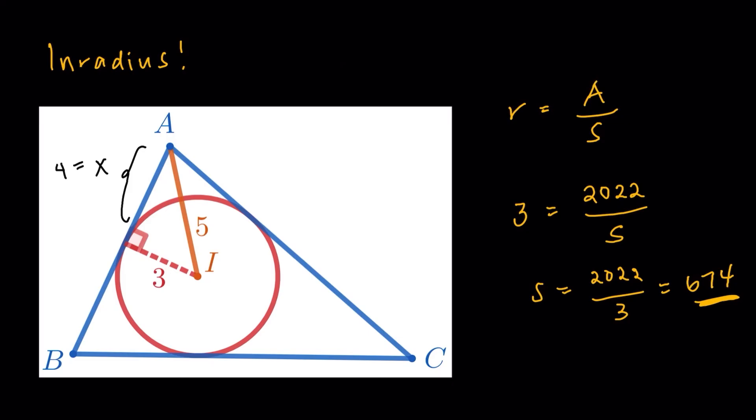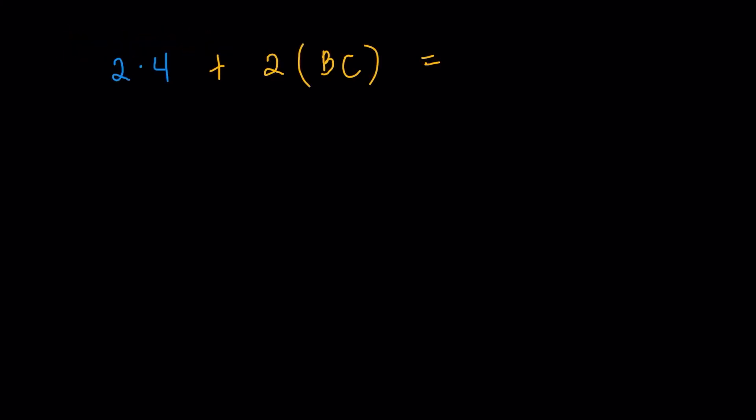Now going back, we do have s to be 674. So the semi-perimeter is 674. So obviously, the perimeter would be twice of 674.